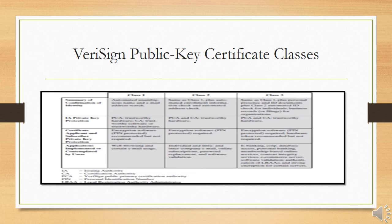VeriSign provides three levels or classes of security for public key certificates. A user requests a certificate online at VeriSign's website or other participating websites. Class 1 and class 2 requests are processed online and in most cases take only a few seconds to approve. For class 1 digital IDs, VeriSign confirms the user's email address by sending a PIN and digital ID pickup information to the email address provided in the application. For class 2 digital IDs, VeriSign verifies the information through an automated comparison with a consumer database, in addition to performing all the checking associated with class 1.